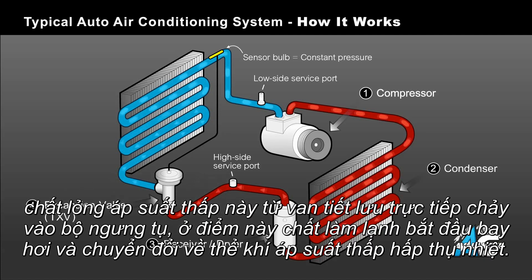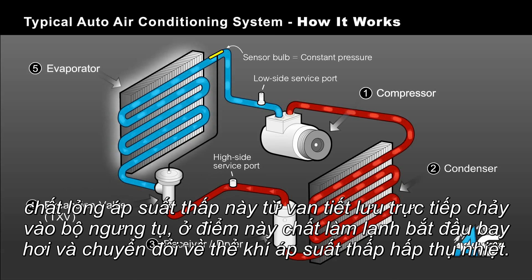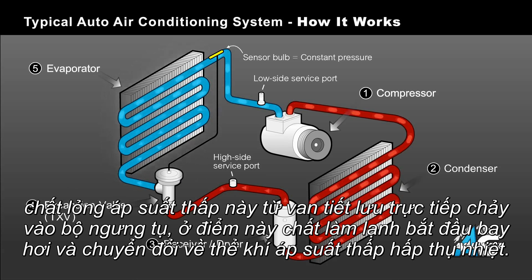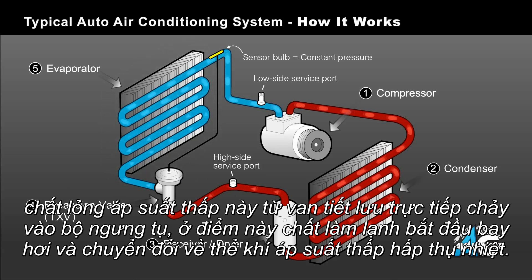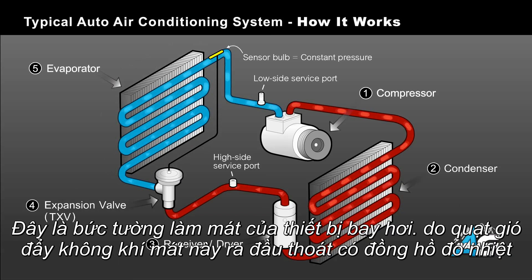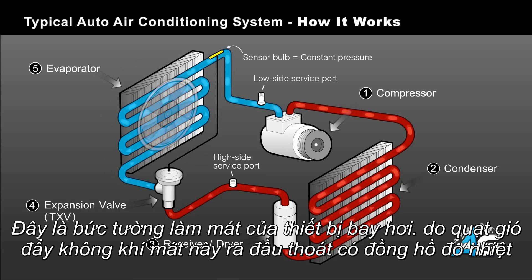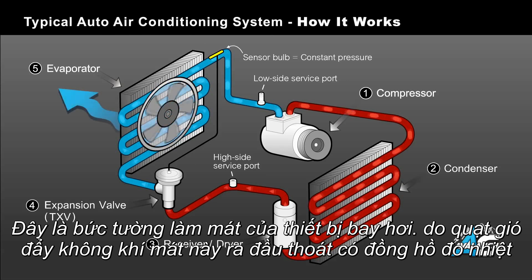This low pressure liquid flows from the expansion valve directly into the evaporator, at which point it begins to boil and turn back into a low pressure gas, absorbing heat as it does so. This chills the walls of the evaporator and the blower motor pushes this cool air through the vehicle's dashboard vents.